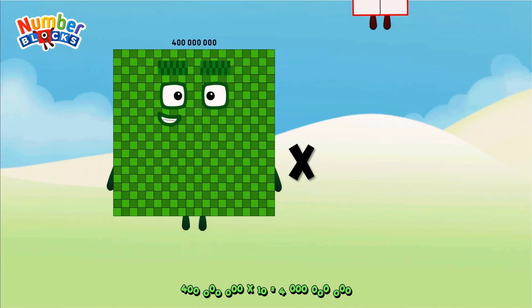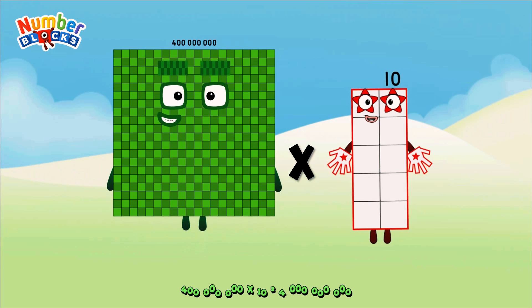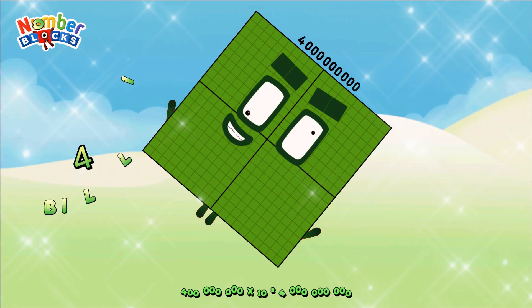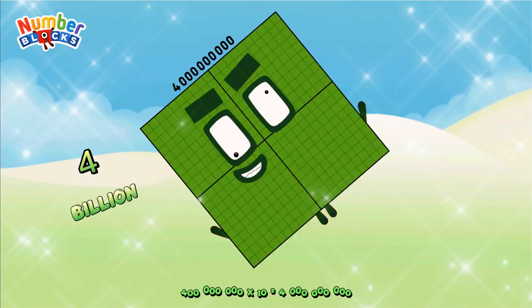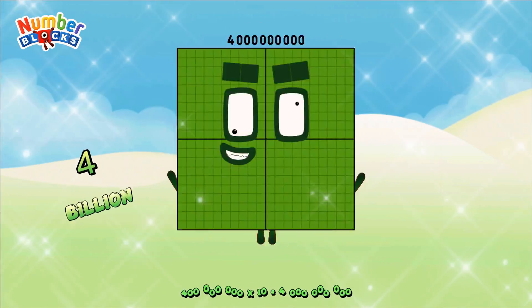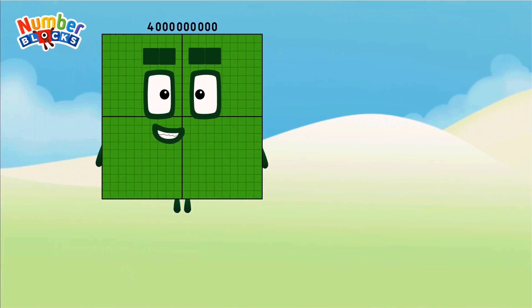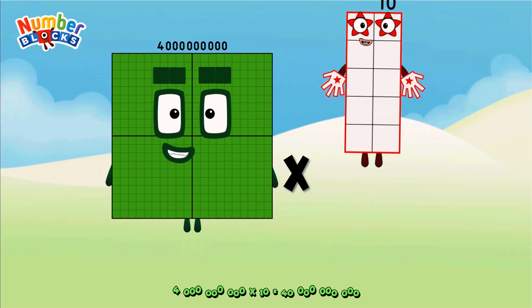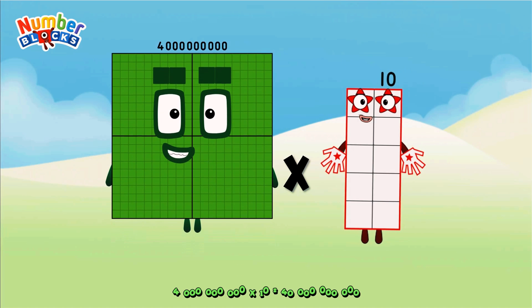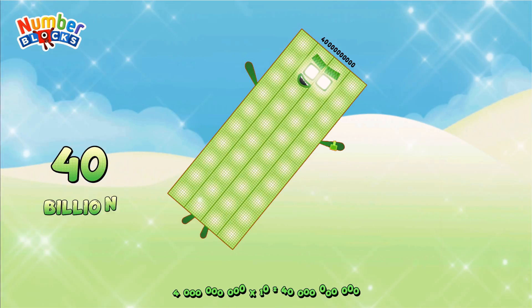Four hundred million, multiplied by ten, equals four billion. Four billion multiplied by ten equals forty billion.